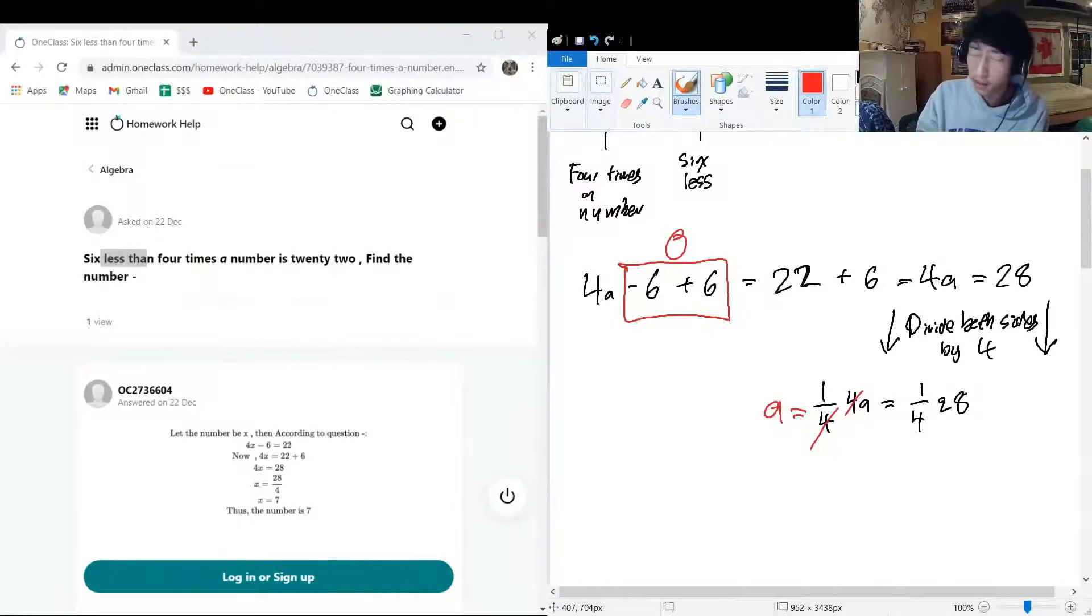And then 28 divided by 4, let's do some quick math, it's got to be 7. So know that a has to be equal to 7. That is our number of interest. And yeah, it's gotta be the case.